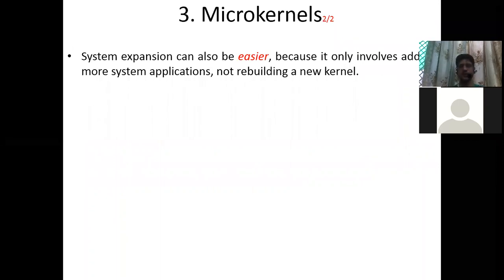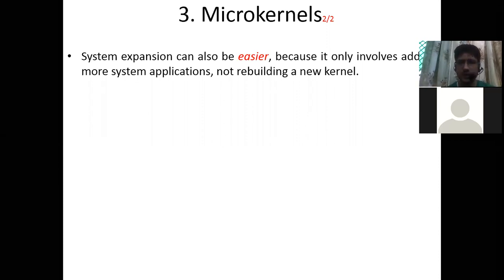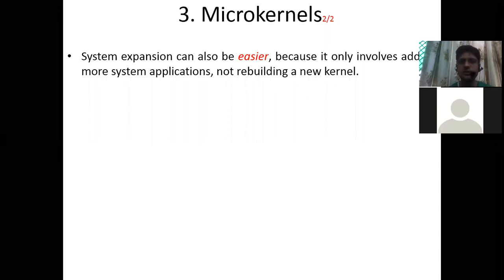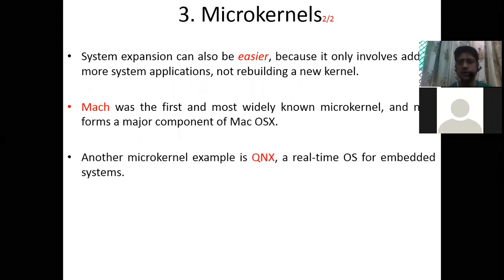System expansion can also be easier in the case of a microkernel, because only essential things are in the kernel. If you want to add one more functionality to your system, you can append that functionality as a system application — you don't need to touch the kernel. System expansion only involves adding more system applications, not rebuilding a new kernel. Mach was the first and most widely known microkernel and forms a major component of the Mac operating system. Another example is QNX, a real-time operating system for embedded systems.